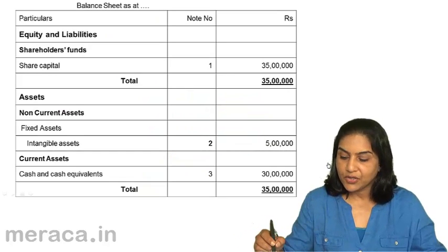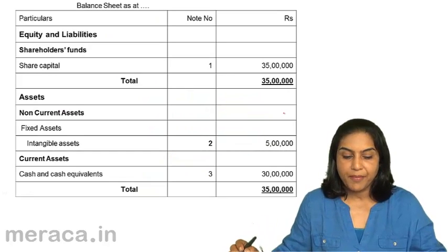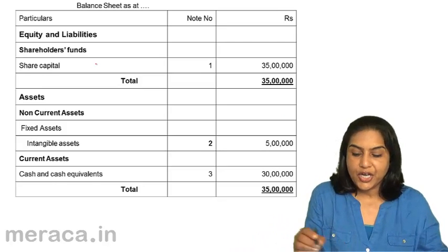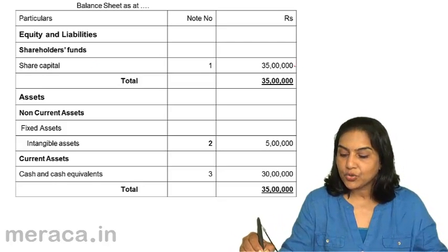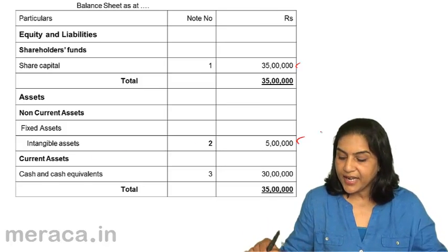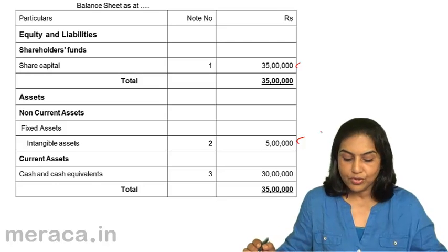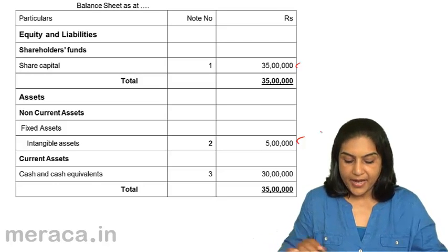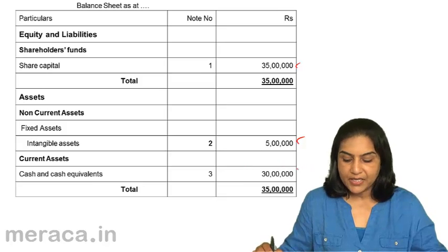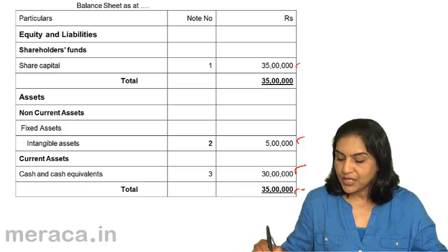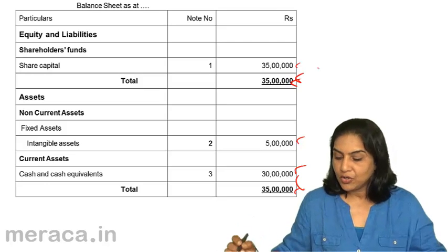This is how the balance sheet would look. The format — equity and liabilities, shareholders' funds, share capital: the total amount of 35 lakhs. Under assets: non-current assets and an intangible asset as per note 2 would be 5 lakhs. Cash and cash equivalents — the balance in bank would be 30 lakhs. So this is how the balance sheet looks.